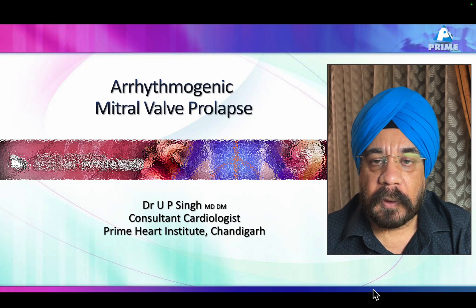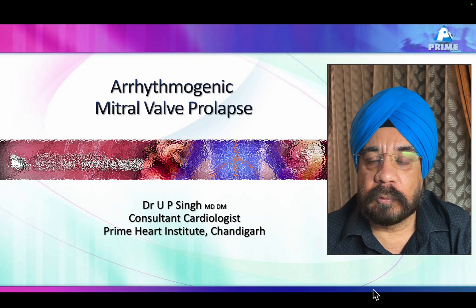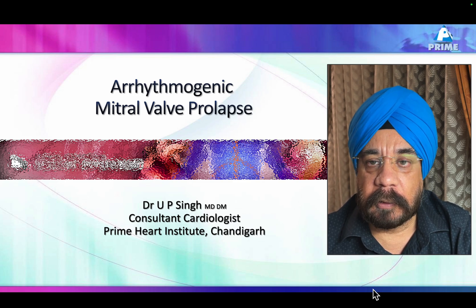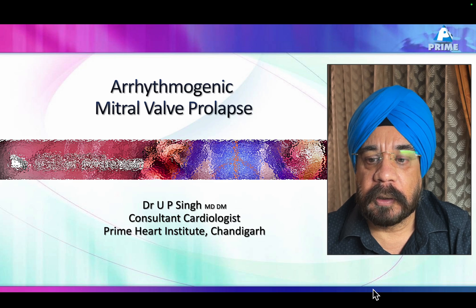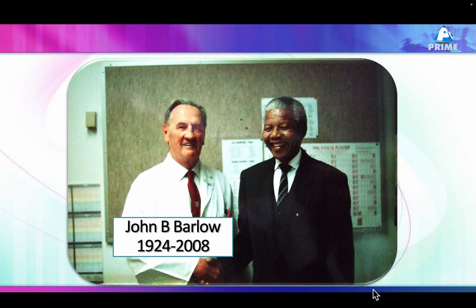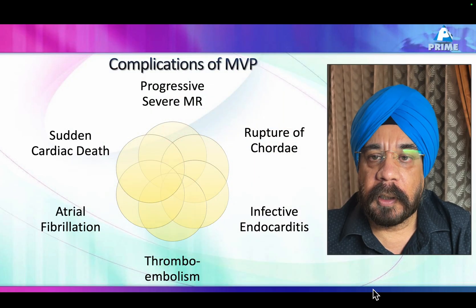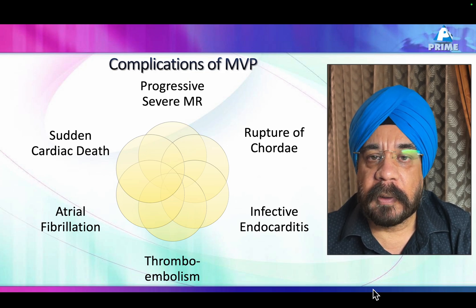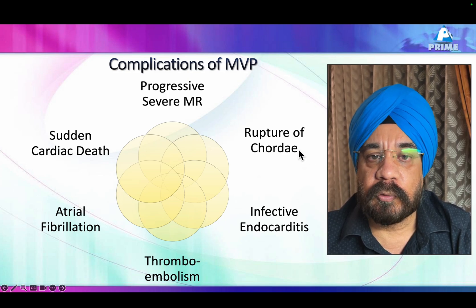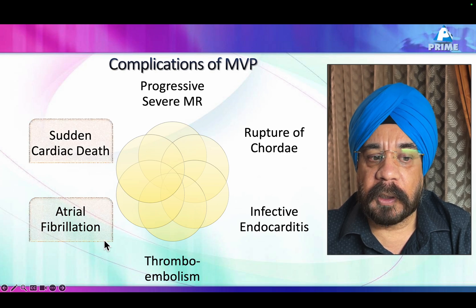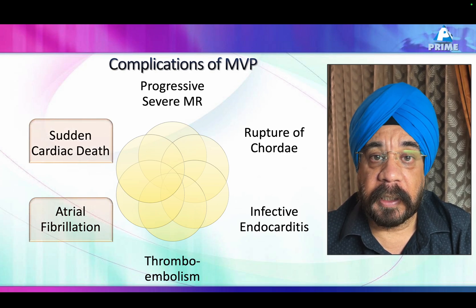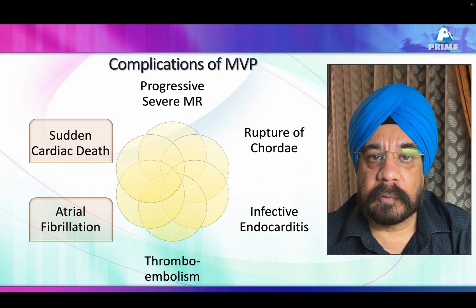Mitral valve prolapse has two varieties. One is absolutely benign, seen in plenty of cases. But there is one dangerous variety called arrhythmogenic mitral valve prolapse. Mitral valve prolapse can cause multiple issues: progressive mitral regurgitation, rupture of the chordae, infective endocarditis, thromboembolization, atrial fibrillation, and sudden cardiac arrest in rare cases.